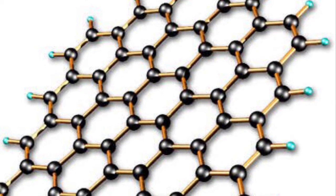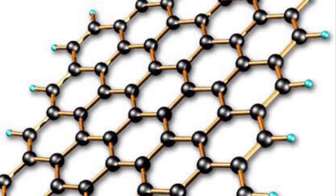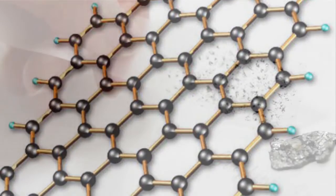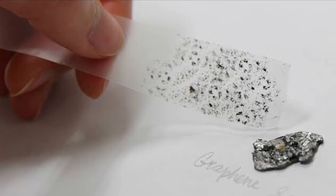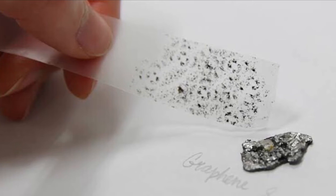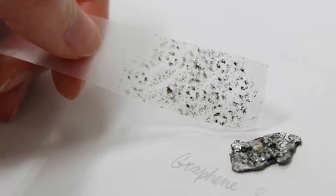Graphene is a single layer of carbon atoms and can be extracted from graphite using scotch tape. Seems interesting, right? That we are getting graphene from graphite just using a tape.